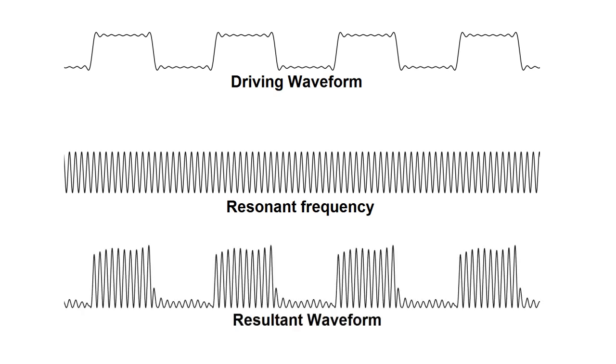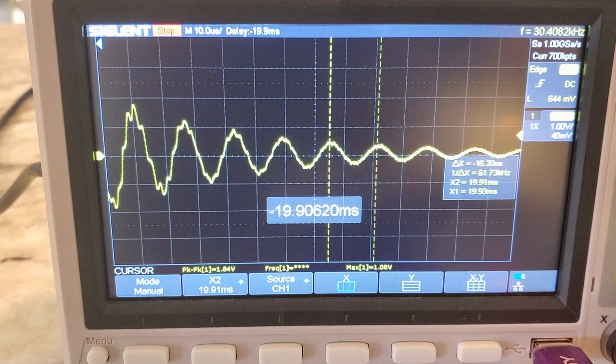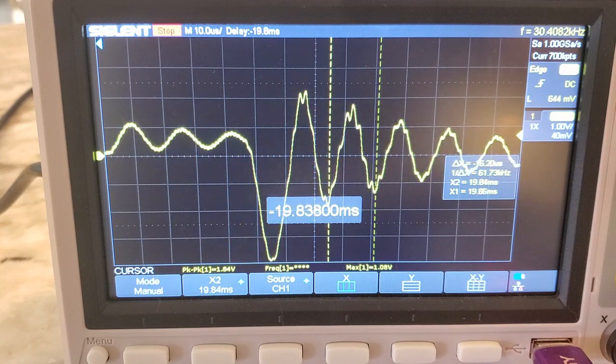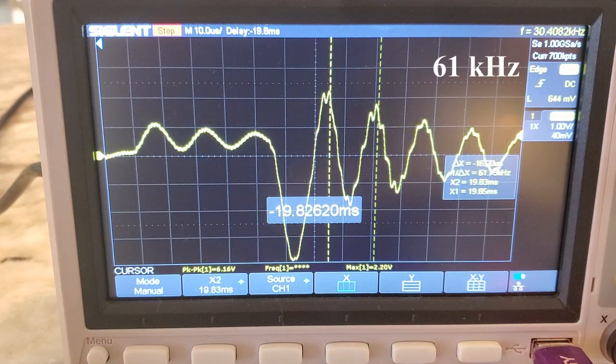The point is, if I look at the frequency of that ringing, I'll know exactly what the resonant frequency of the Tesla coil is. If I zoom in with my oscilloscope and dial my cursors in, I can see that the ringing happens at about 61 kilohertz.